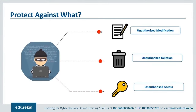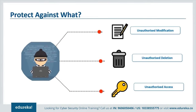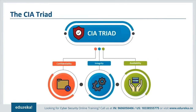When talking about cybersecurity, there are three main activities we are trying to protect against: unauthorized modification, unauthorized deletion, and unauthorized access. These three terms are synonymous with the CIA triad — confidentiality, integrity, and availability. The CIA triad is commonly referred to as the three pillars of security, and most security policies of organizations are based on these three principles.